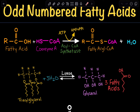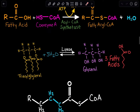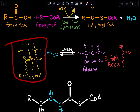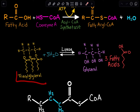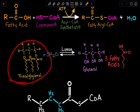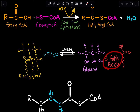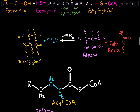After the fatty acid has been activated with the coenzyme A group attached, it's going to enter the mitochondrial matrix for beta-oxidation. Fatty acids come from our lipids — this is a general structure of a triacylglycerol. We break down lipids through enzymes known as lipases and get our products of glycerol and fatty acids. Fatty acids are chains made up of carbon and hydrogen with a carboxylic group, and glycerol is broken down in a separate pathway also for energy.